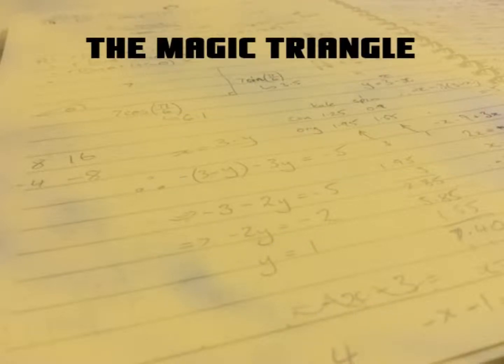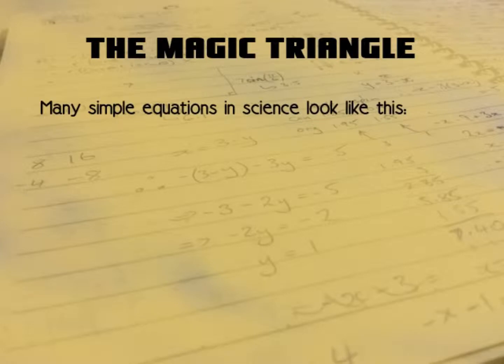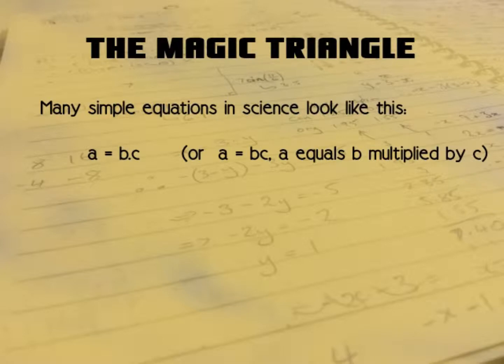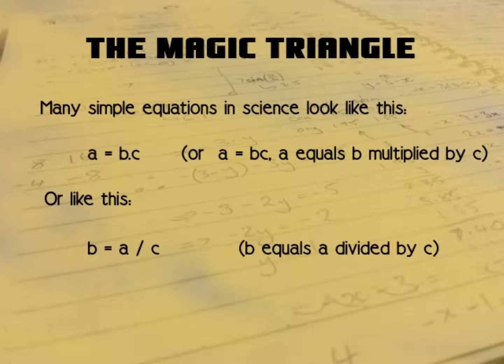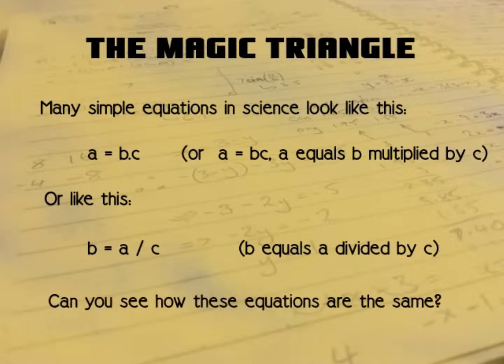Now we're going to look at something I call the magic triangle. Except it's not really magic, I'm sorry to disappoint you. But many simple equations in science look like this. A equals BC. So A equals B multiplied by C. Or they might look like this. B equals A over C. B equals A divided by C. But can you see how these equations are the same? How they are related to each other?